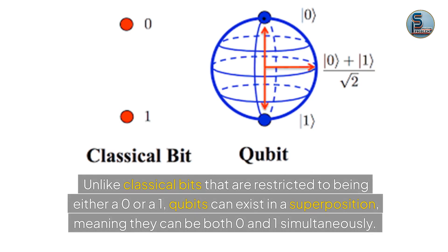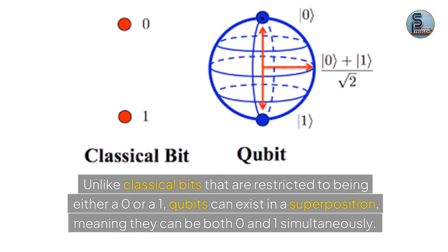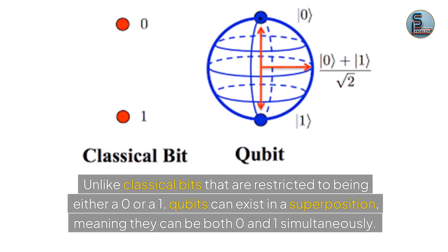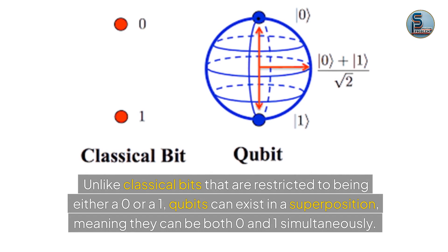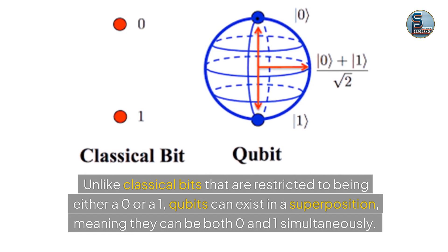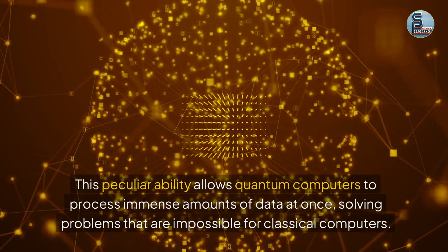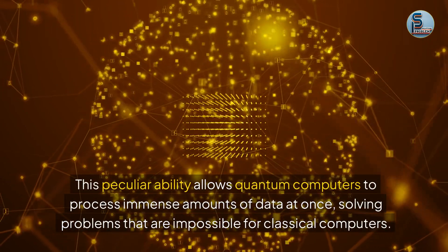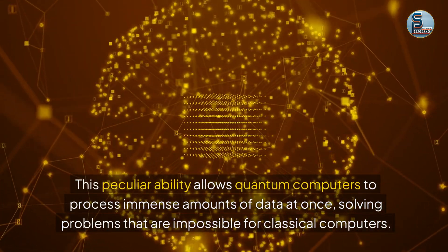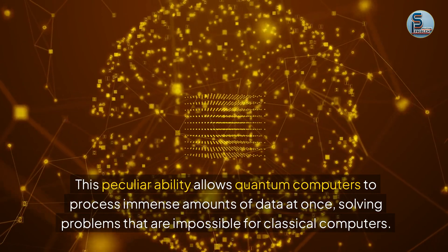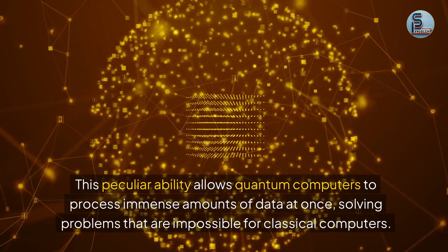Unlike classical bits that are restricted to being either a zero or a one, qubits can exist in a superposition, meaning they can be both zero and one simultaneously. This peculiar ability allows quantum computers to process immense amounts of data at once, solving problems that are impossible for classical computers.